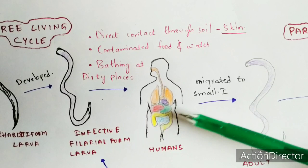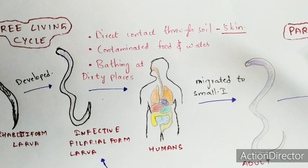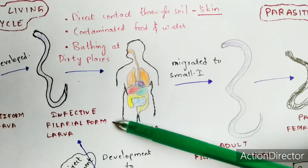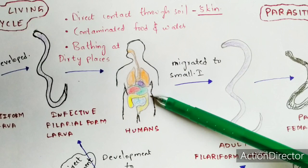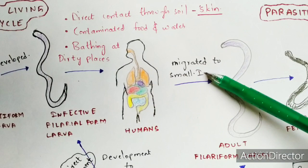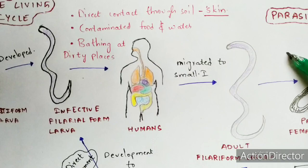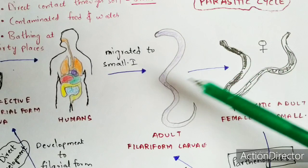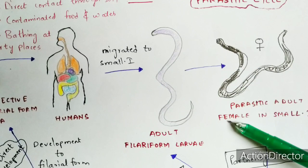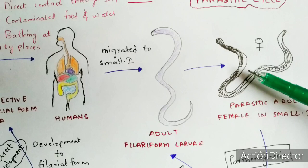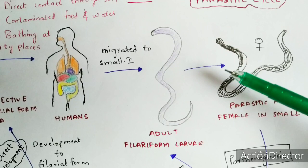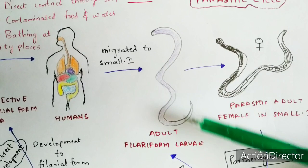From the skin, the infective filariform larvae migrate to the small intestine and get transformed into adult filariform larvae. In the small intestine, this adult filariform larva develops into a parasitic adult female. Males do not exist at this stage in the parasitic cycle — only females develop in the small intestine of the human host.